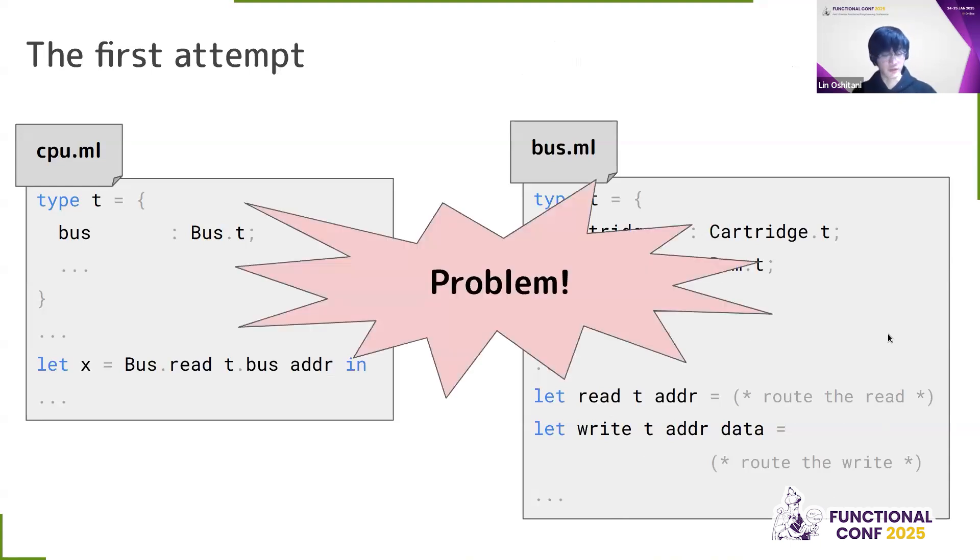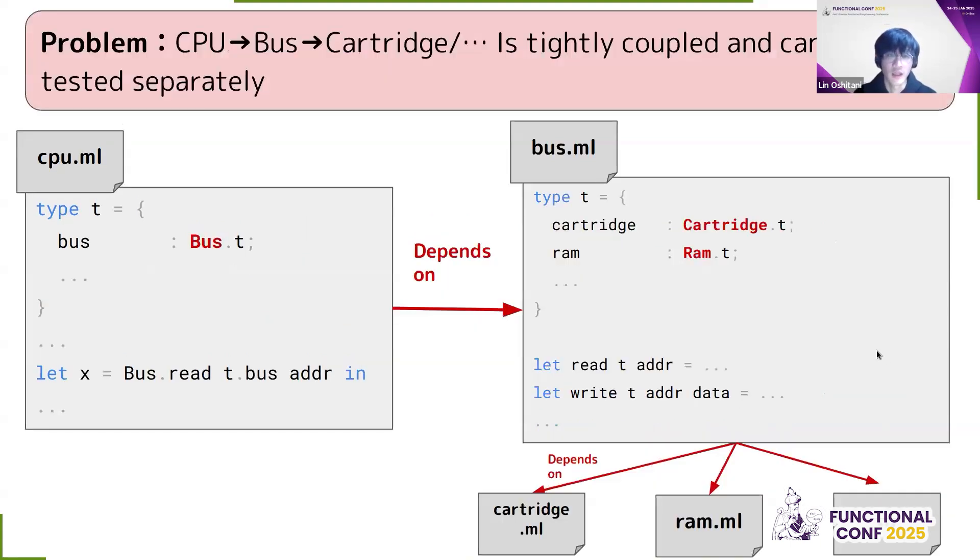However, this implementation turned out to be problematic. And the problem is that the CPU, bus, cartridge, and all the IO devices is all tightly coupled and cannot be tested separately. What I mean by this is that the CPU module has a concrete reference to the bus module. And the bus module has concrete reference to the cartridge and RAM and so on. So everything is tightly coupled and it's very hard to test. Because to test the CPU, I have to implement the bus. But to implement the bus, I have to implement all the IO devices. So I cannot just simply test the CPU in this case.